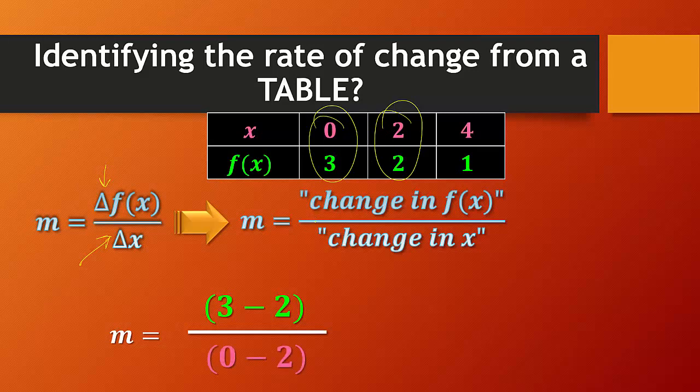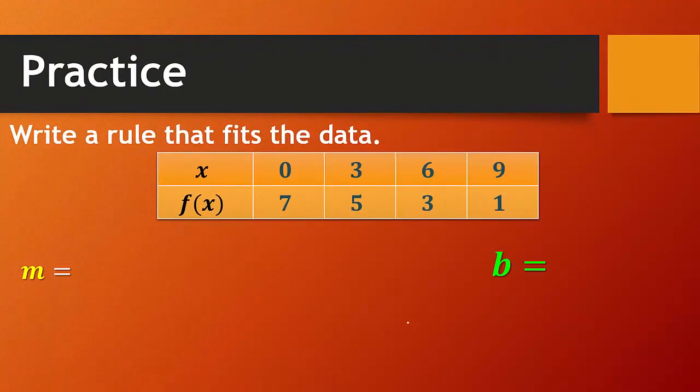Now, if you subtract a negative, just remember that that is actually addition. So 3 minus 2 is 1. 0 minus 2 is negative 2. So we move the negative sign from here up to here and just make it negative 1 half. Remember, if you have a negative sign on the top and the bottom, the negative signs cancel out and it's actually positive.